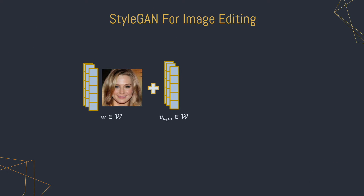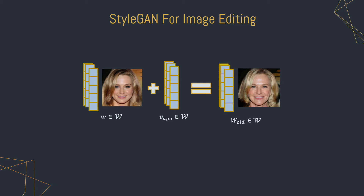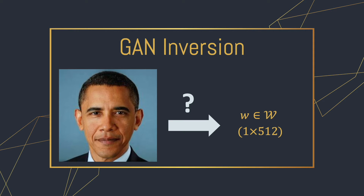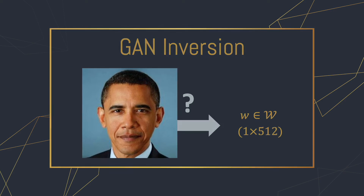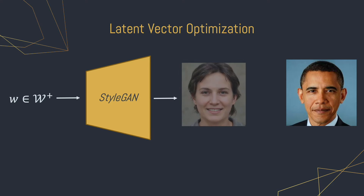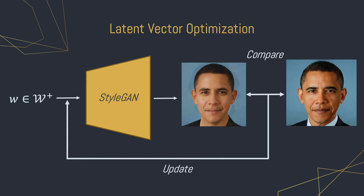Previous works have shown that leveraging StyleGAN's rich latent space allows one to perform extensive image manipulations. But to apply such edits on real images, one must first invert the given image into StyleGAN's latent space — that is, retrieve the latent code W such that passing W to the pre-trained StyleGAN returns the original image. These works usually resort to using a per-image optimization into an extended latent space W+, and this typically requires several minutes for accurately reconstructing a single input image.